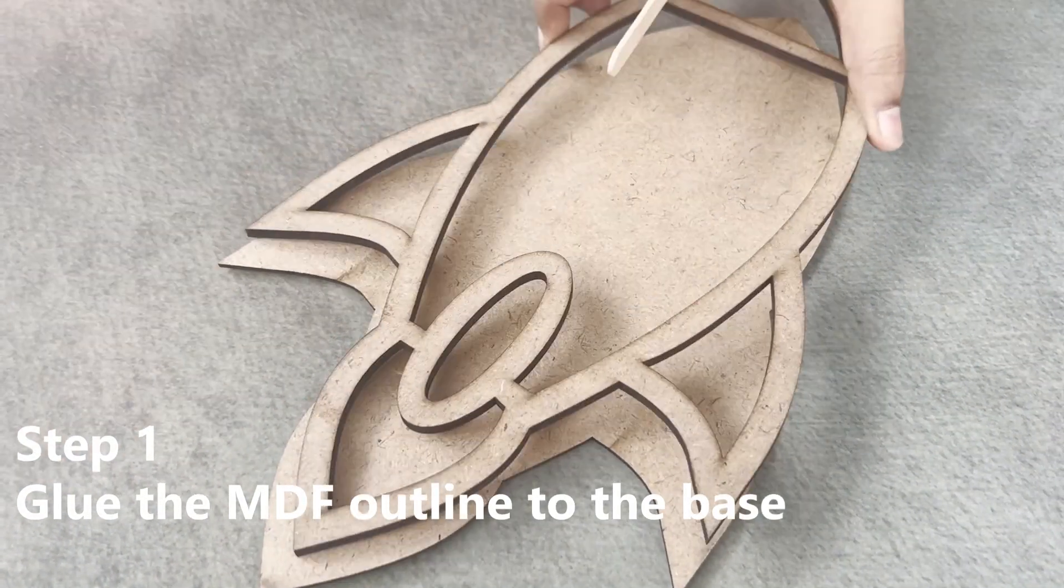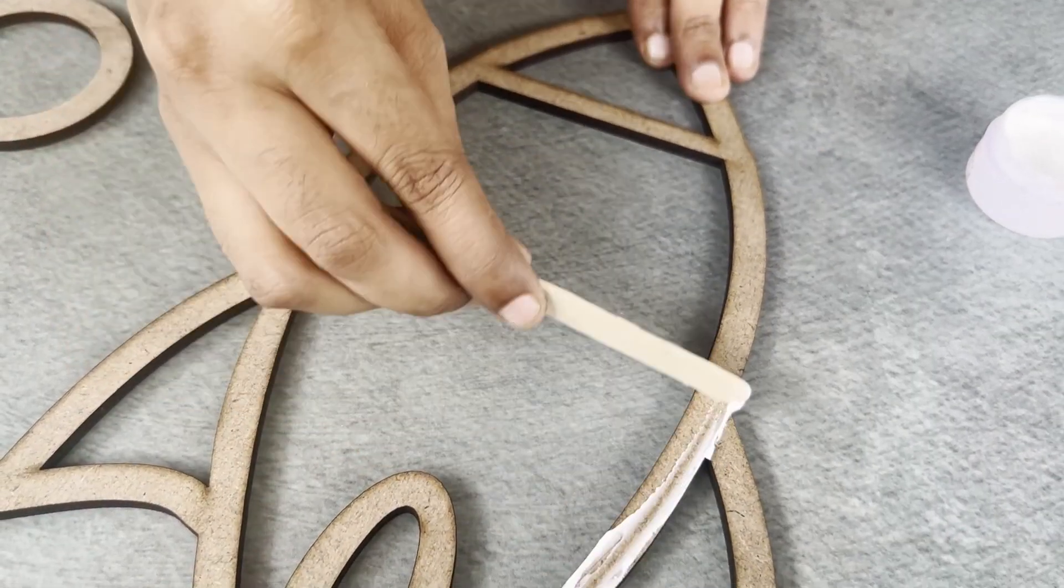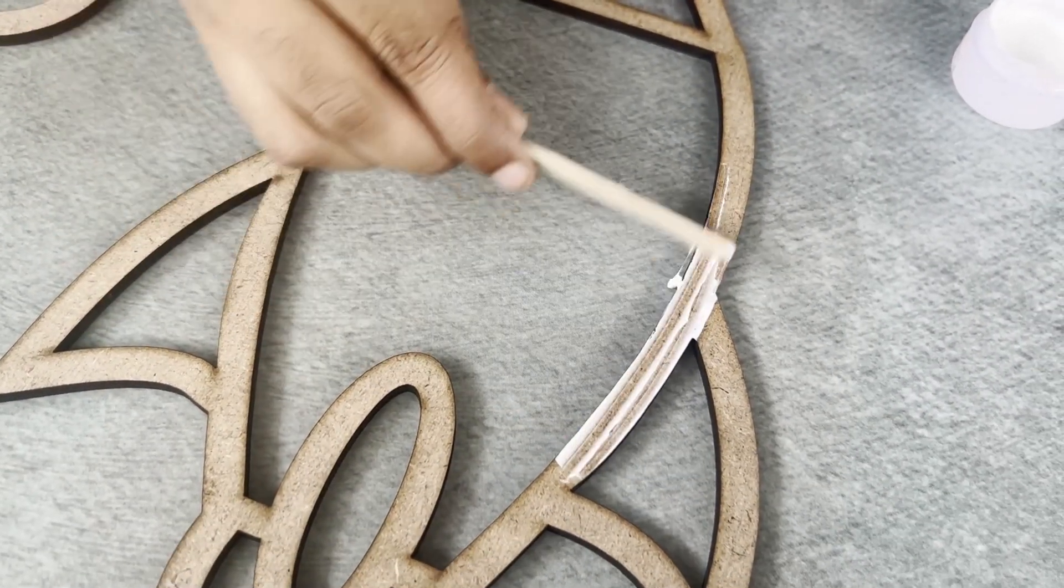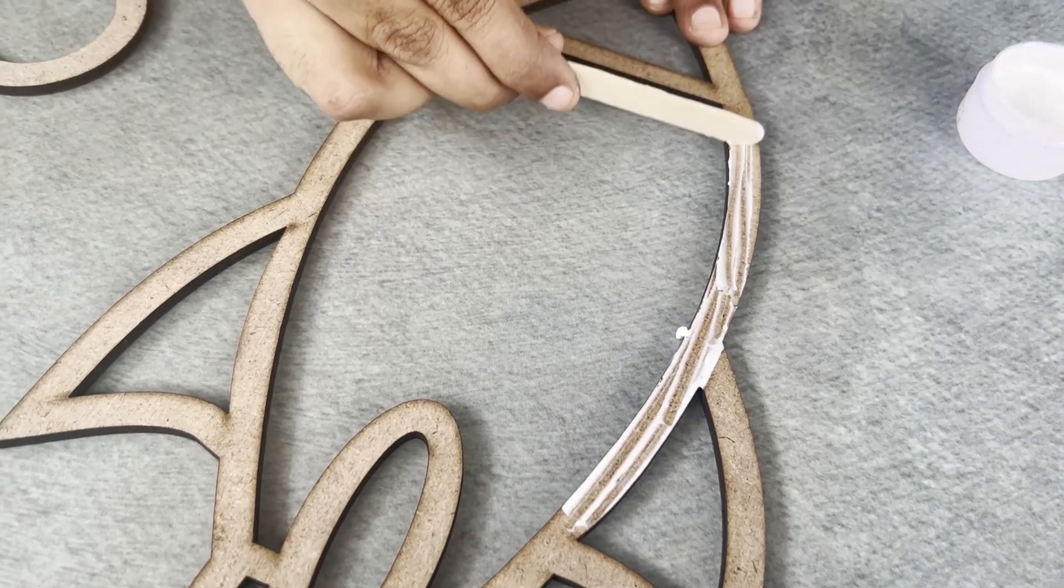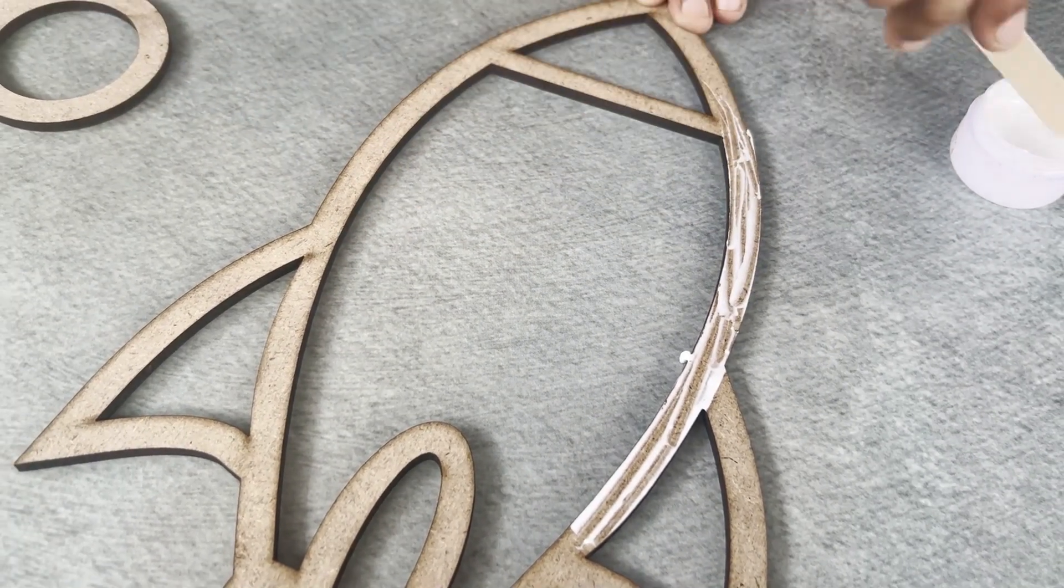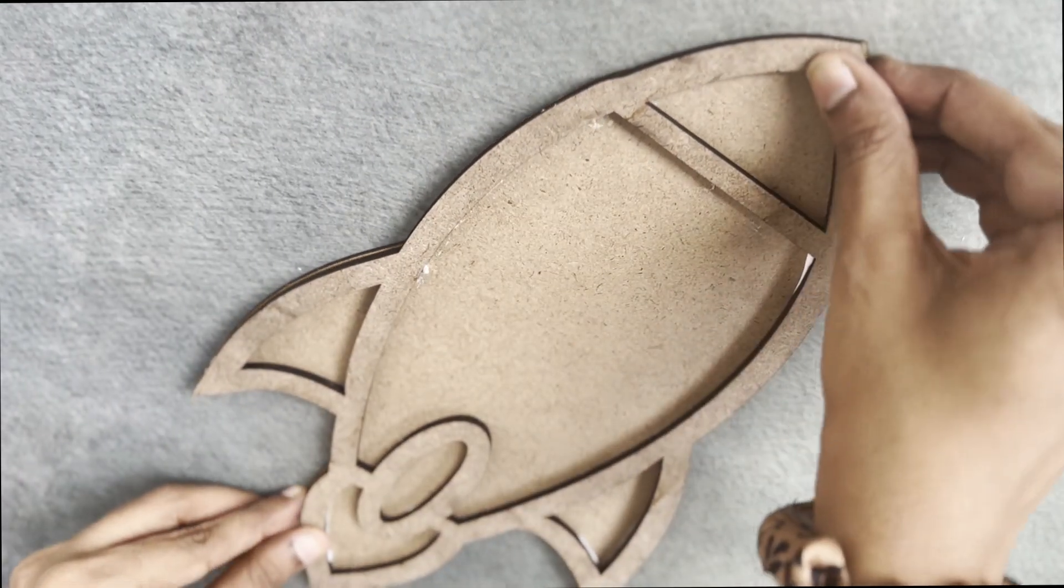Lay down the messy mat on the surface where you want to make the project. Apply a thin layer of glue to the outline of the design using the applicator and lay the MDF base on the messy mat. Align the outline and stick it, wipe away any excess glue, and let the glue dry thoroughly for 10 minutes.